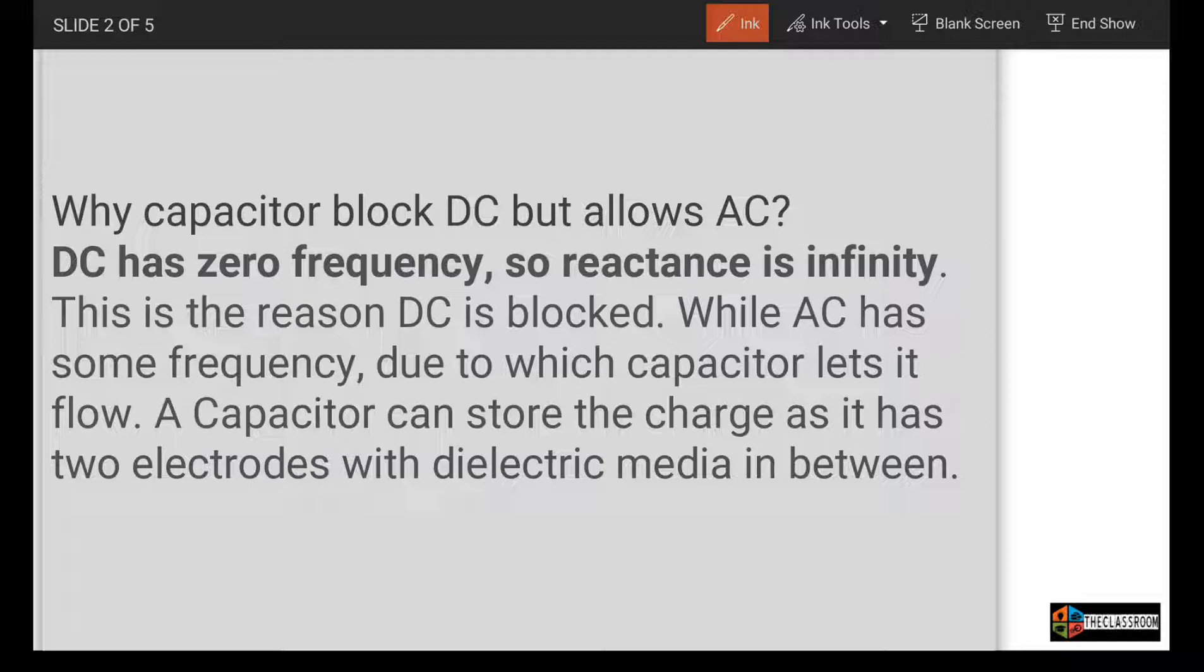Why does capacitor block DC but allow AC? DC has zero frequency, so reactance is infinity. The formula is Xc equals one by 2πFC. If frequency is zero, then one by zero equals infinity. This is the reason DC is blocked.